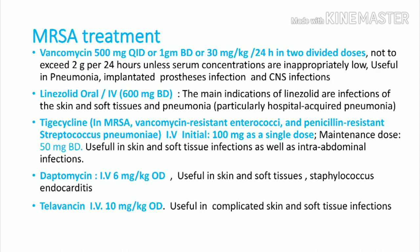Tigecycline is a third drug used mainly in vancomycin-resistant enterococcus or penicillin-resistant Streptococcus pneumoniae, and also in MRSA infection. The dose is 100 mg as an initial loading dose; from day two onwards, 50 mg BD as maintenance. It is mainly used in skin, soft tissue, and intraabdominal infections — it is a very good choice for intraabdominal infection. Daptomycin is the fourth drug, dosed at 6 mg/kg body weight once daily, mainly useful in skin, soft tissue infections, and staphylococcal infective endocarditis. Suspect staphylococcal infective endocarditis in intravenous drug abusers who develop right-sided infective endocarditis.